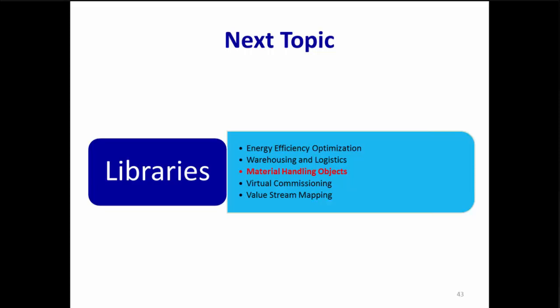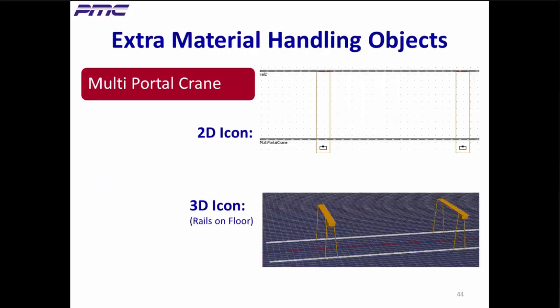PlantSim has several material handling objects, many not available in most other products. We'll show you several of them, including ones already in the default class library toolbox and others available in free libraries. The multi-portal crane moves in three directions and can pick up a part from anywhere and move it anywhere. It can run on rails mounted on the floor or on rails attached to the ceiling. Several cranes can run on one set of rails too, as shown here.